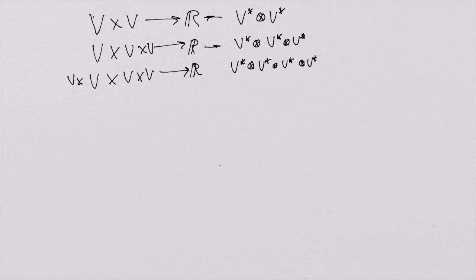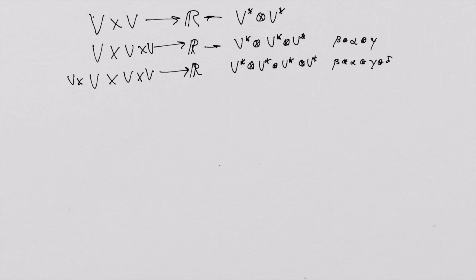All of these different tensor product spaces are defined exactly as we defined the original one. In the triple case, a typical tensor would be beta tensor product alpha tensor product gamma; in the quadruple case it would be beta tensor product alpha tensor product gamma tensor product delta, where beta, alpha, gamma, and delta are all elements of the dual space. The mappings all act the same way. So beta⊗alpha⊗gamma⊗delta is a map that takes an ordered quadruple of vectors V, W, S, and R and gives you a real number.